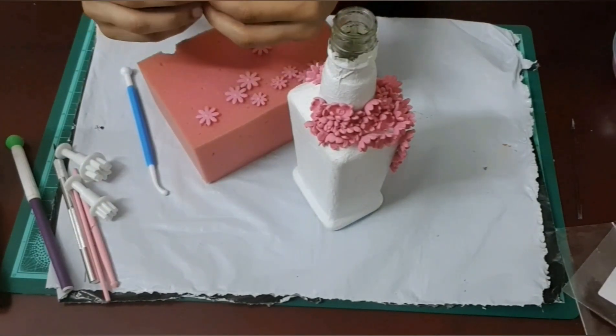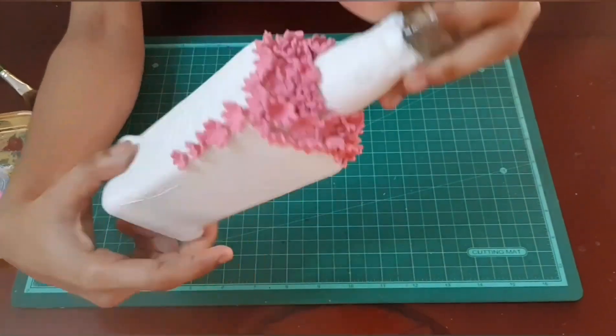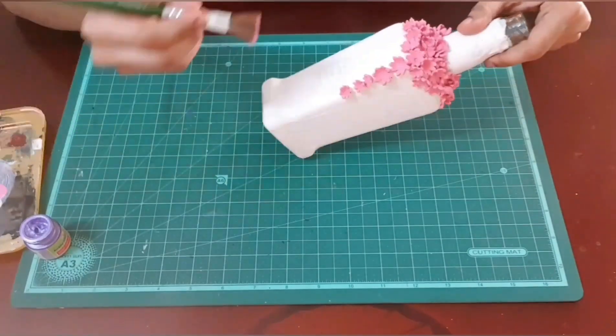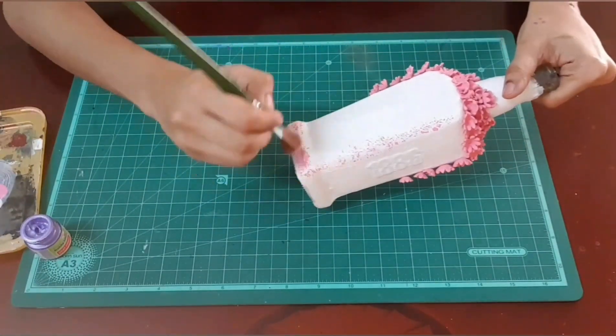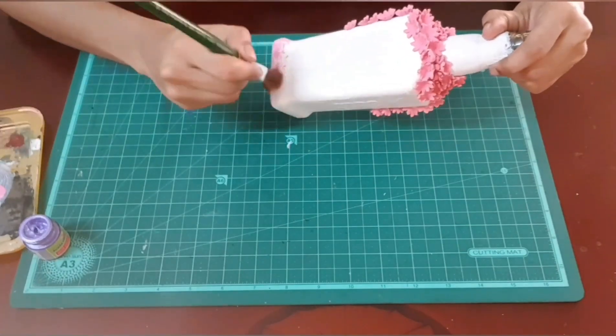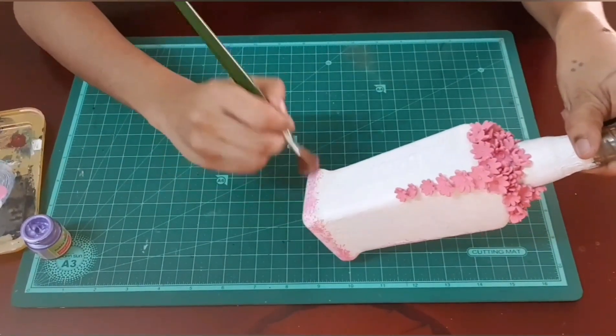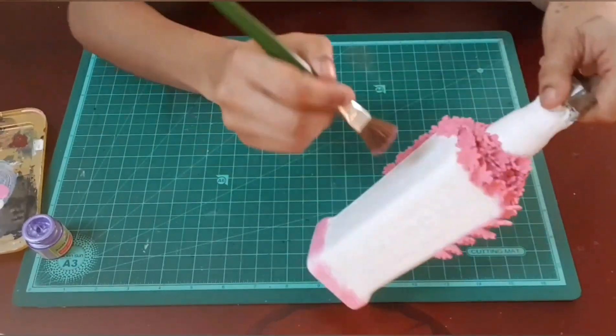As you can see on my workstation this is a completed bottle. It's dried completely. All the flowers are dried completely. I have just taken a dry brush and using the same pink and giving a little bit of detailing on all the edges.